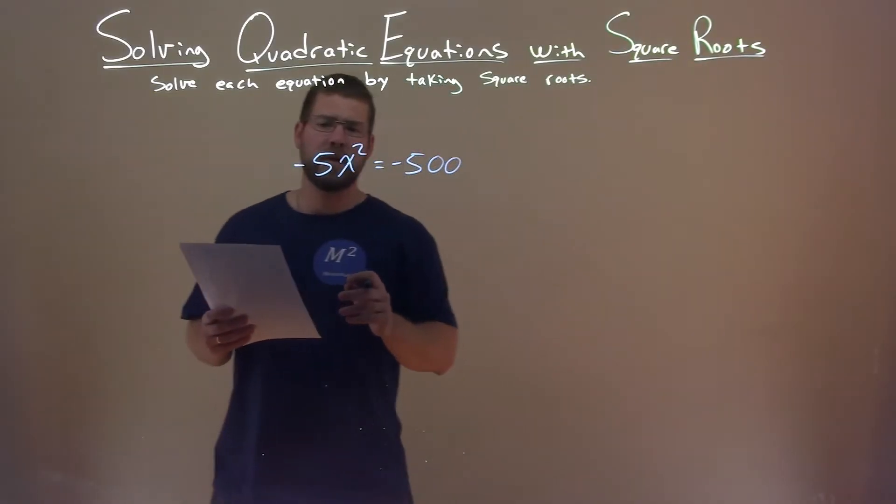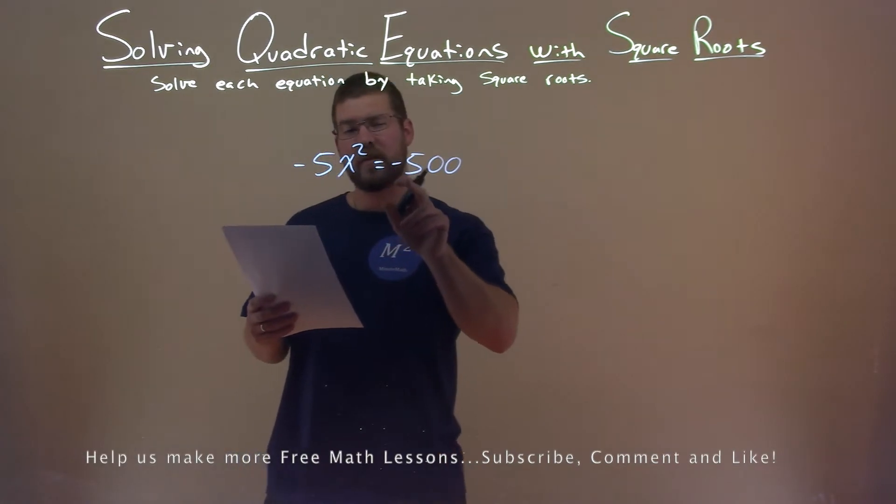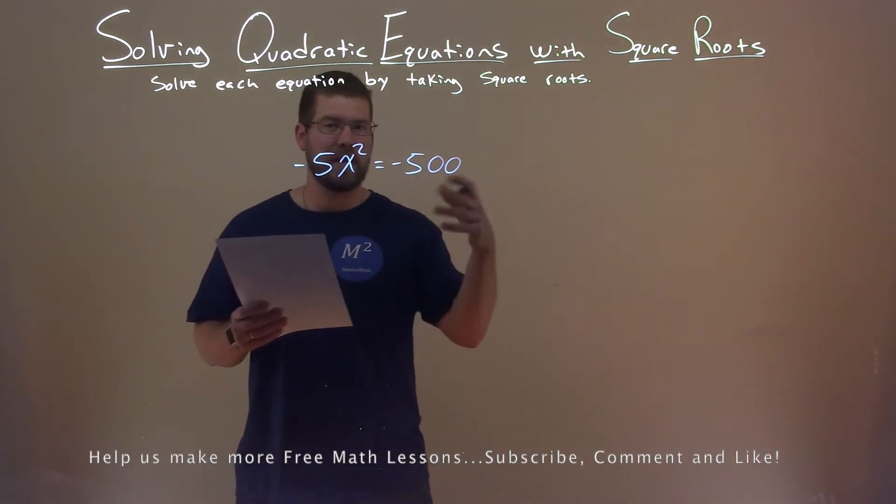We're given this problem here, negative 5x squared equals negative 500, and we want to solve this equation by taking the square root.